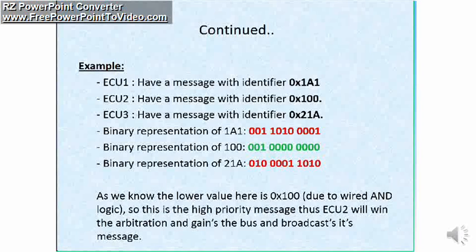Now we can easily distinguish which is the lowest value ID. Here it is 100. So due to this, the message 100 will be transmitted first because this is the lowest value and this will be the highest priority. So we will see what is arbitration in next videos.